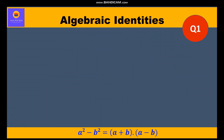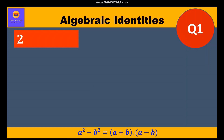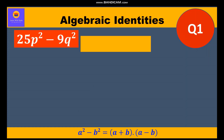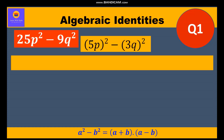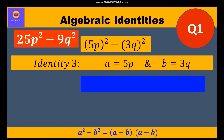Let's start with our first question: 25p² - 9q². Now 25p² can be written as (5p)² and 9q² can be written as (3q)². So clearly this is Identity 3 where a = 5p and b = 3q. So our factors are (5p + 3q)(5p - 3q).